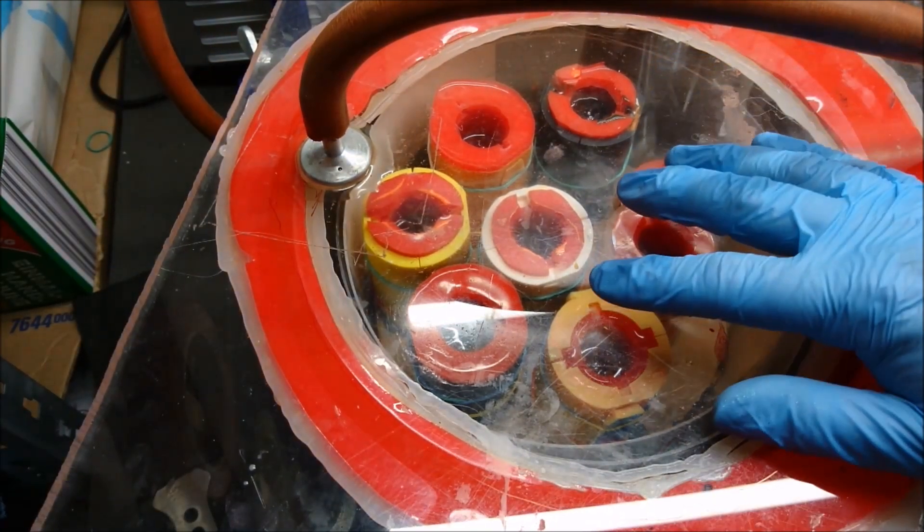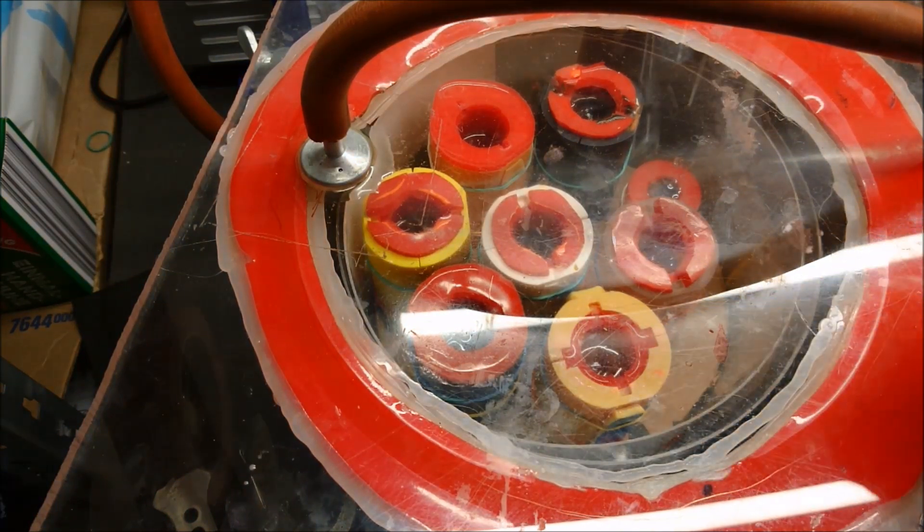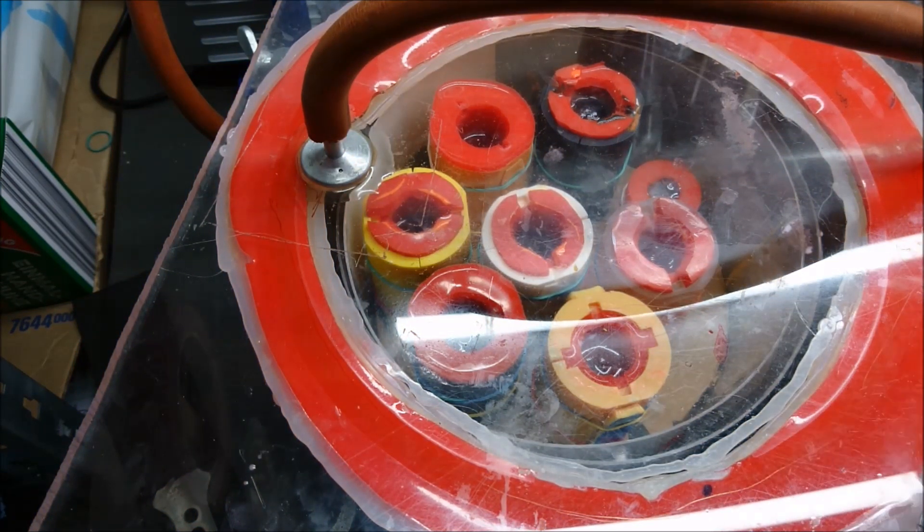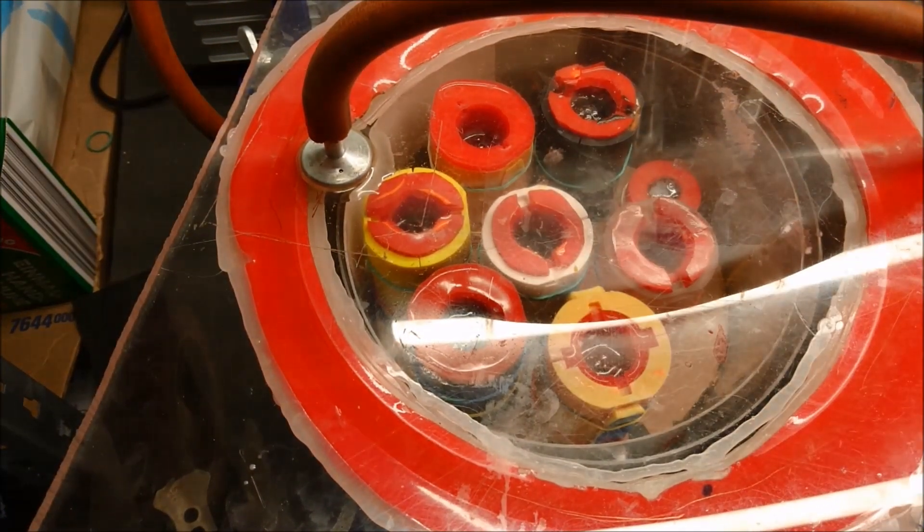If you pull too much vacuum, you start to degas the material. So all the tiny bubbles in the material start to pop up, so it starts to foam a little bit on the surface and bubble all around. We don't want that. We just want to remove the air inside the mold.